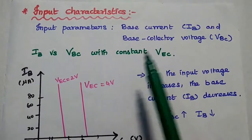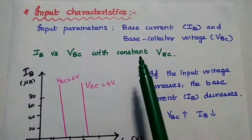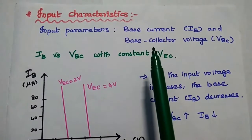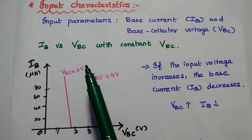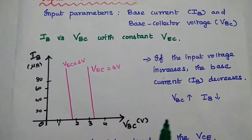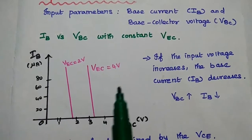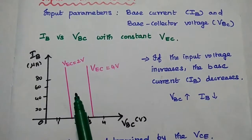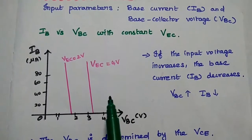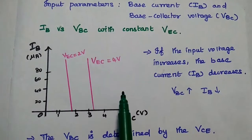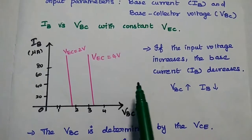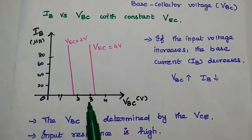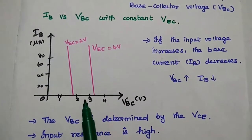For the input characteristics of common collector configuration, we analyze the input parameters with respect to output voltage. The input parameters are base current and base-collector voltage, and we draw the graph of IB versus VBC at a constant output voltage. If the input voltage increases, the base current decreases, meaning this configuration has very high input impedance. This characteristic is different from CE and CB configurations.